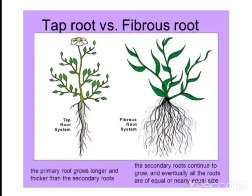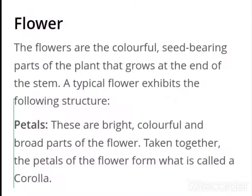Tap root vs. fibrous root: the tap root system has one main prominent root, while fibrous root does not have one single main root. Next is our flower.